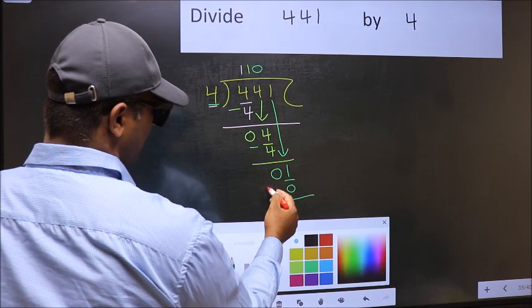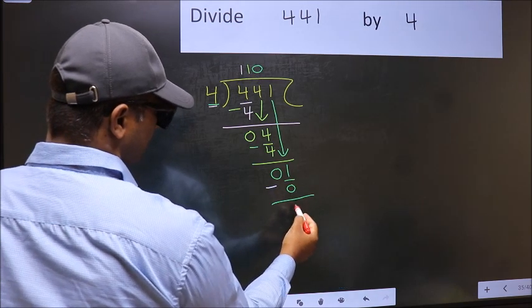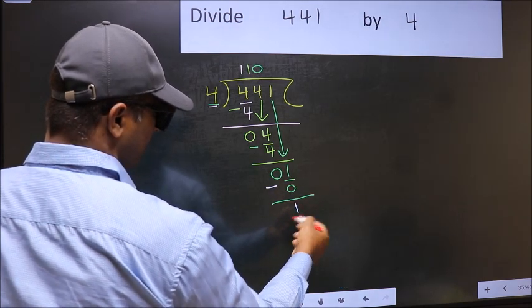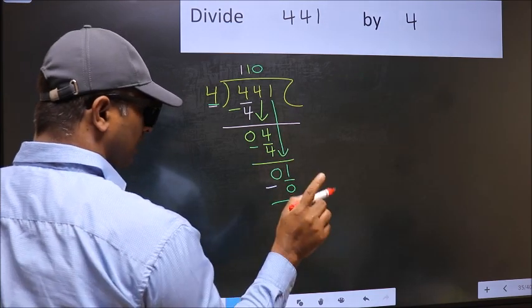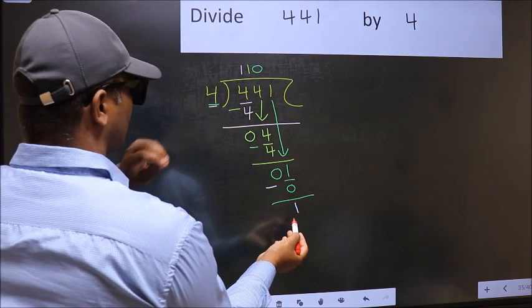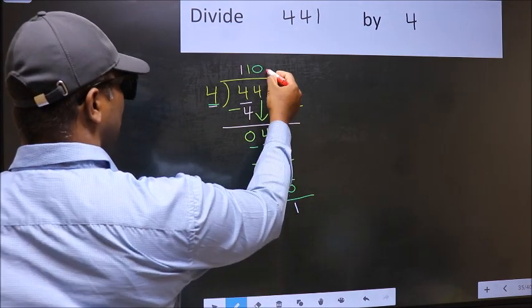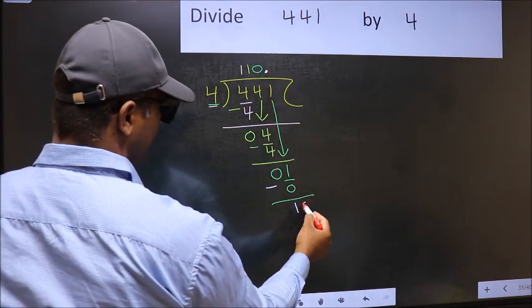Now, you should subtract. 1 minus 0, 1. Over here, we did not bring any number down. And 1 is smaller than 4. So, now you can put a dot and take 0.